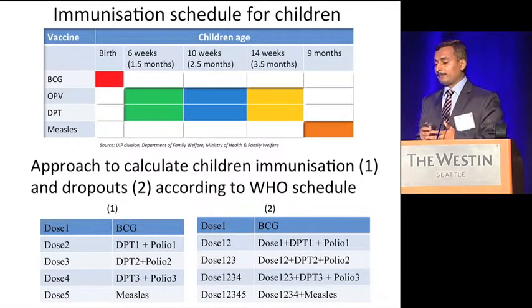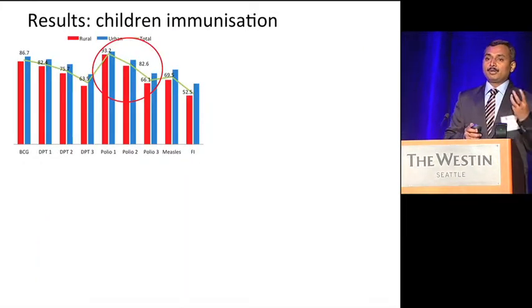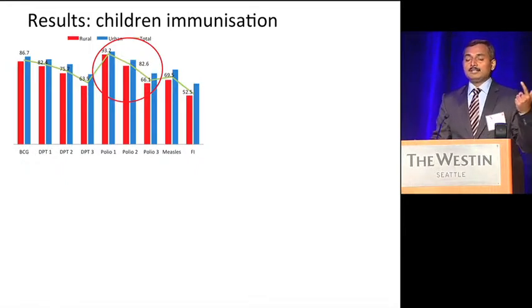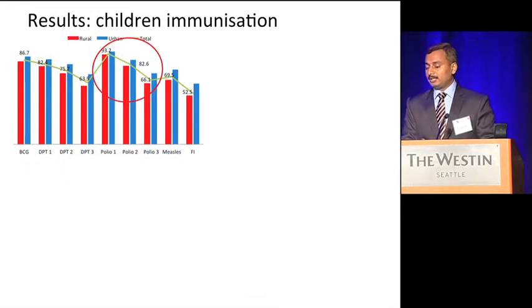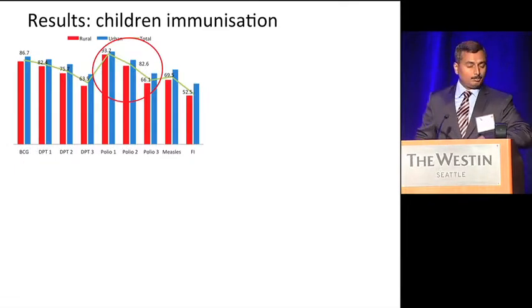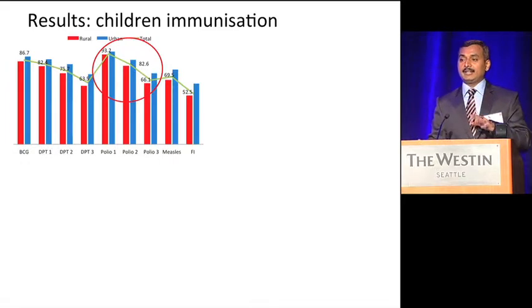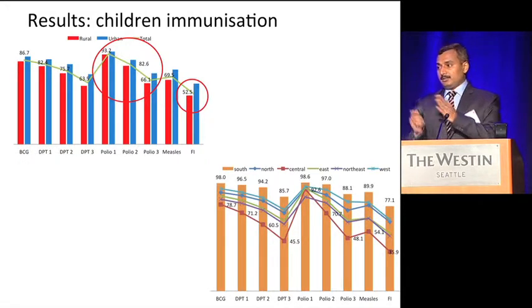Looking at results by background characteristics: at the national level, 52.5% of children are fully immunized. In rural areas, this is below the national average. Geographically, immunization is categorized into six divisions — south, north, central, eastern, northeast, and western India. Full immunization is very low in the northeast at approximately 36%, whereas in the southern part it is near 77%. By wealth quintile, the lowest quintile has approximately 36% fully immunized compared to 73% in the highest quintile. Mother's education shows similar patterns.